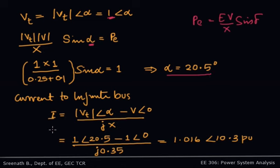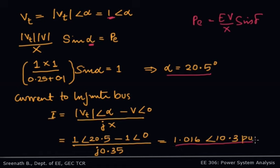Now we calculate the current flowing into the infinite bus. The current I is given by the terminal voltage Vt minus the infinite bus voltage V, divided by the total reactance. That is: I = (1∠20.5° − 1∠0°) / j0.35.